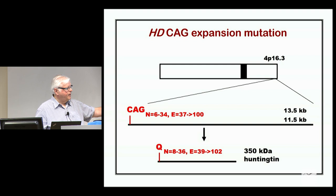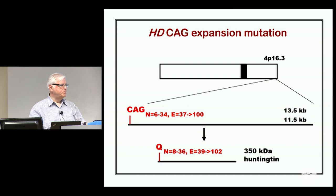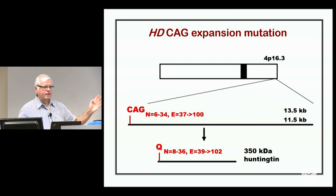The repeat codes for glutamine. It's in a very large protein called Huntingtin that we had no idea existed until we cloned it — we actually thought it was two genes as we were doing part of the process because we couldn't connect the cDNAs, but it eventually turned out to be one. The function of it has been worked on for 25 years and it's got lots of functions.